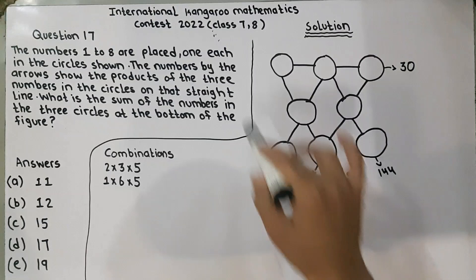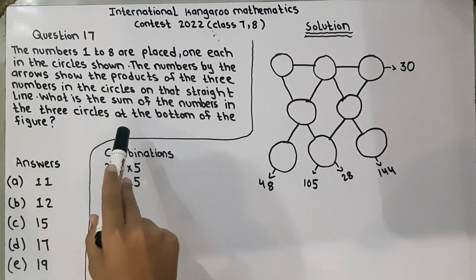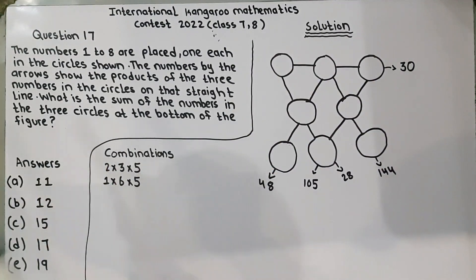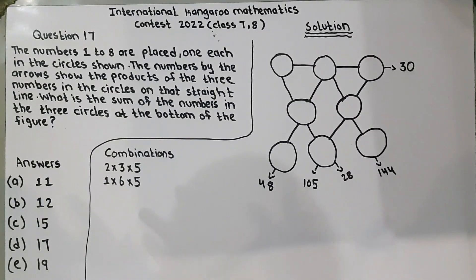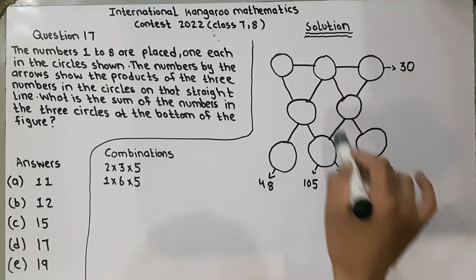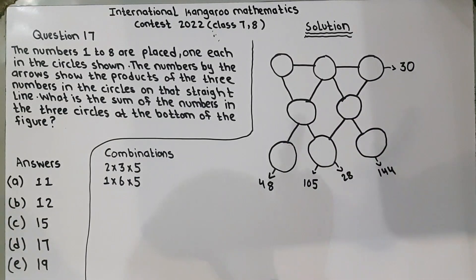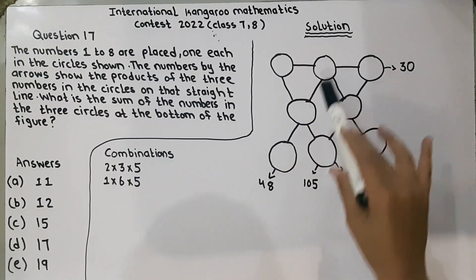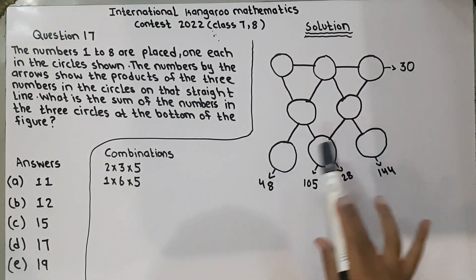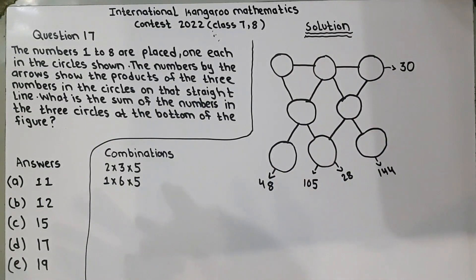What is the sum of the numbers in the 3 circles at the bottom of the figure? He is talking about these 3 circles. He is saying that if we have put the right numbers, what is the sum of the bottom 3 circles? When we solve all this, we will plus these 3 numbers and what will be the answer?